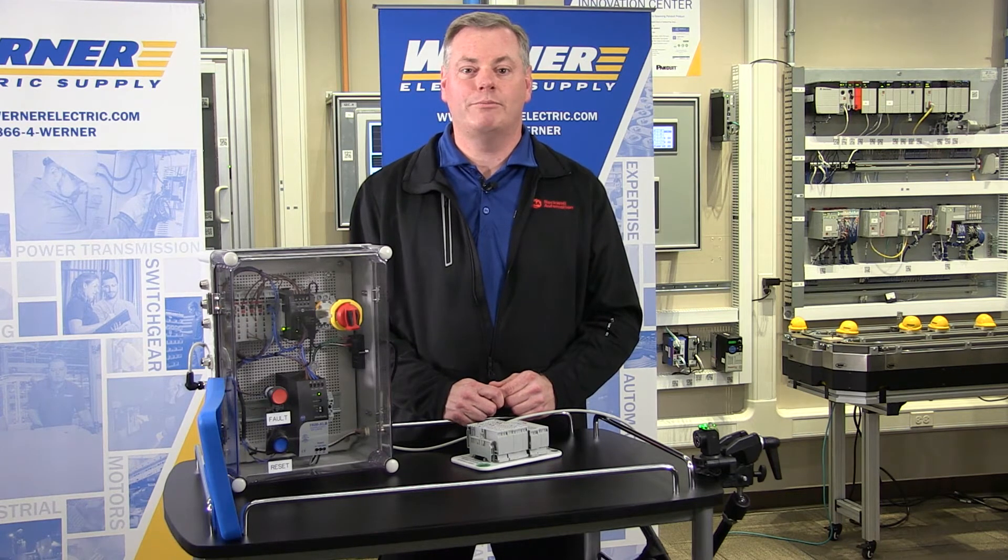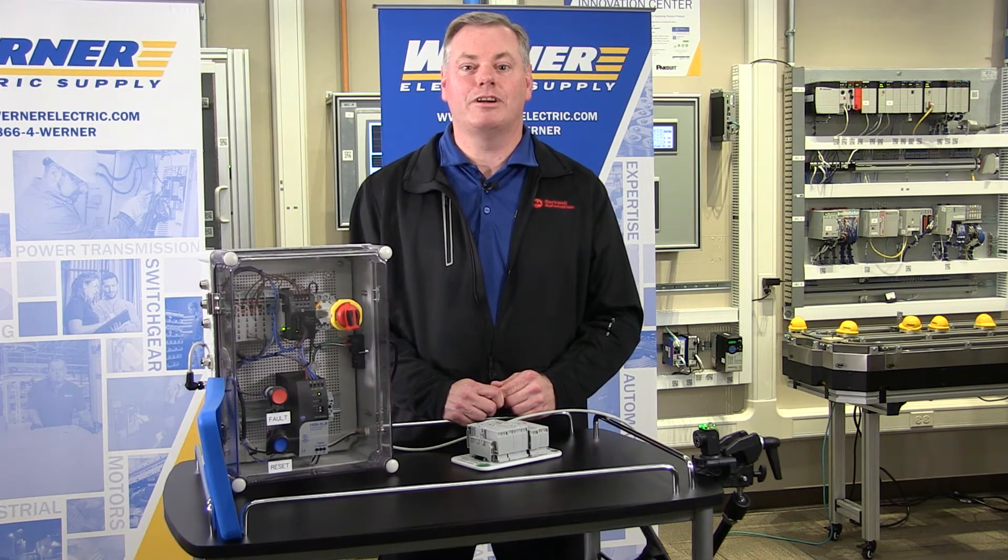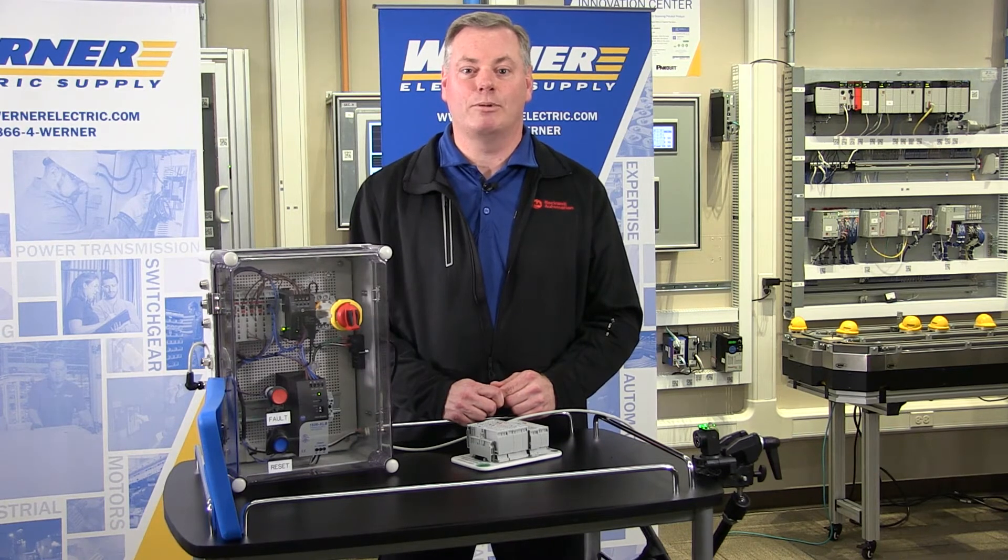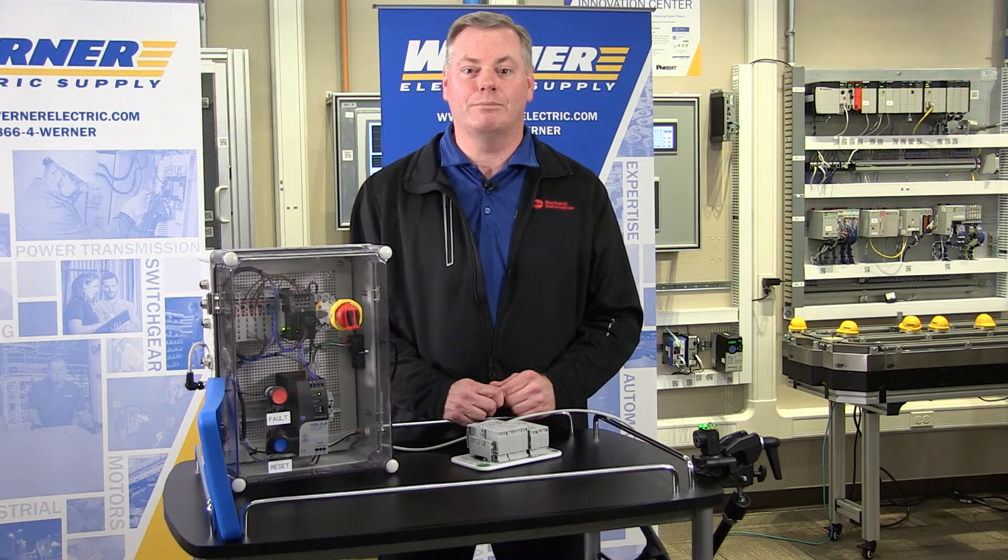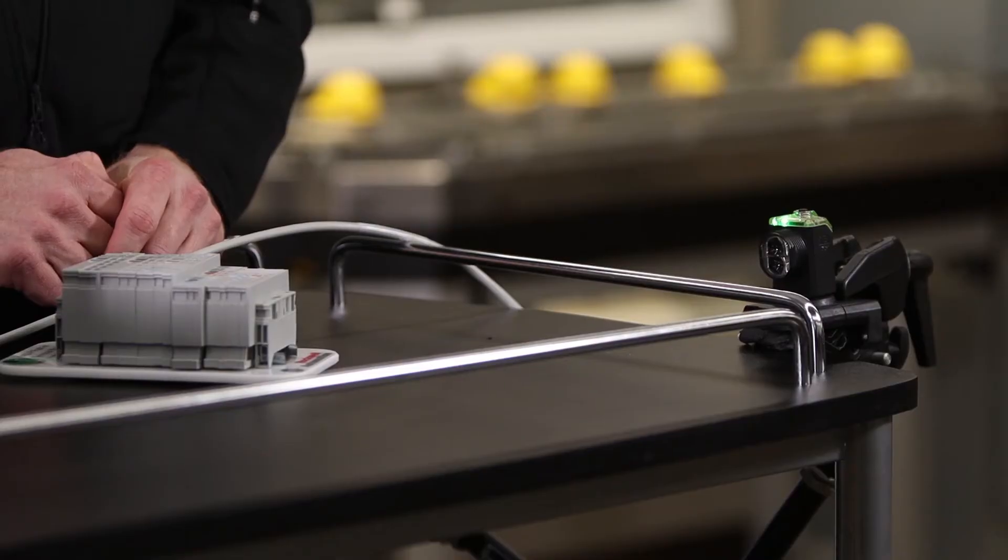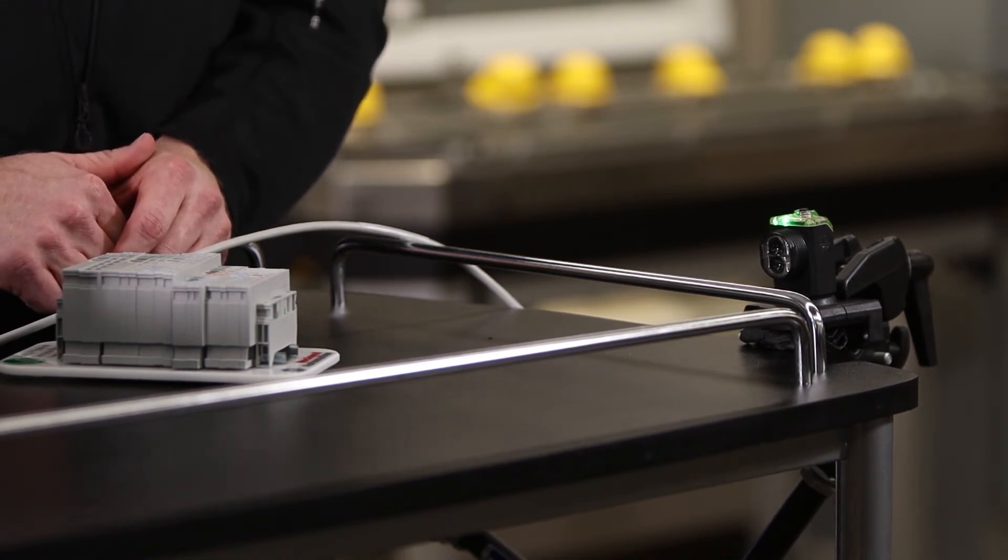The 42AF background reflection sensor also allows you to teach the sensor to function in light operate or dark operate. In case you're not familiar with these terms, light operate means that the sensor will turn on its output when the light is reflected back to it and dark operate means that the sensor will turn on its output when no light is reflected back to it. Your application will determine which is correct.